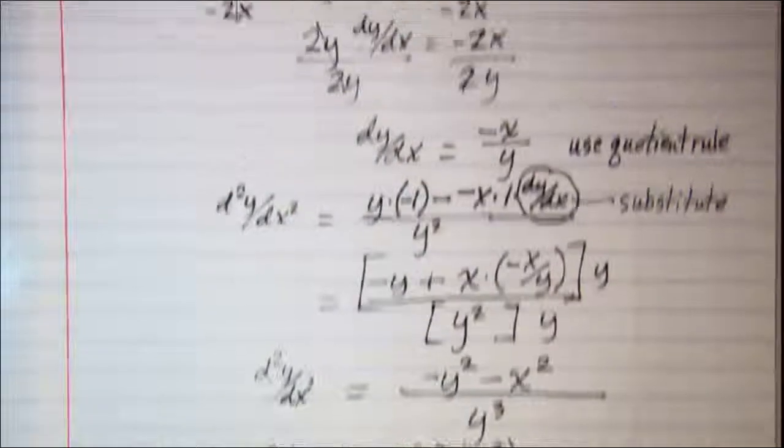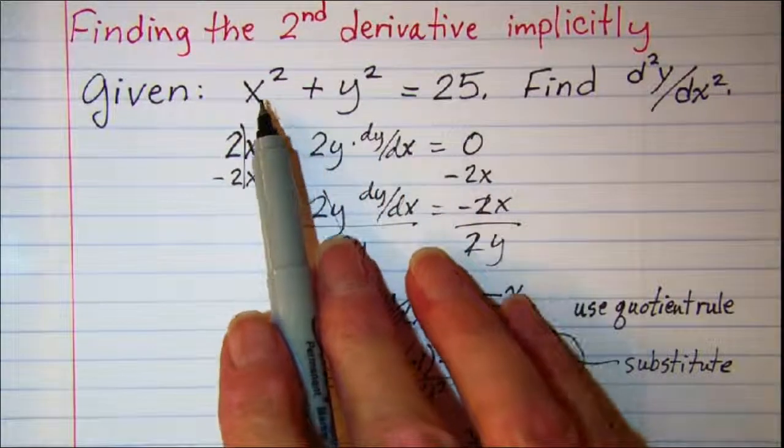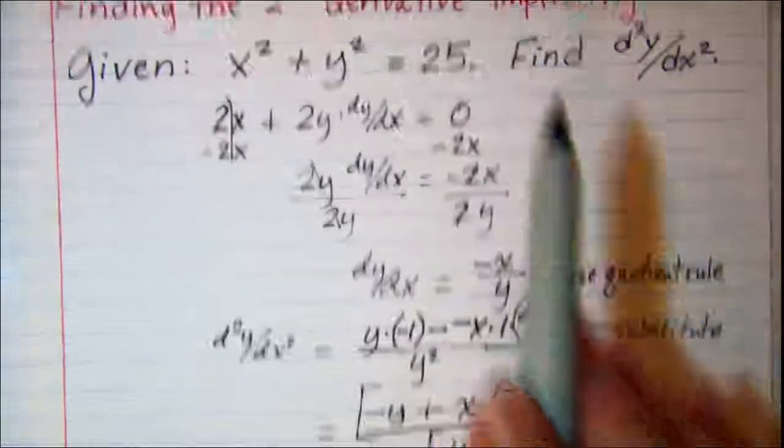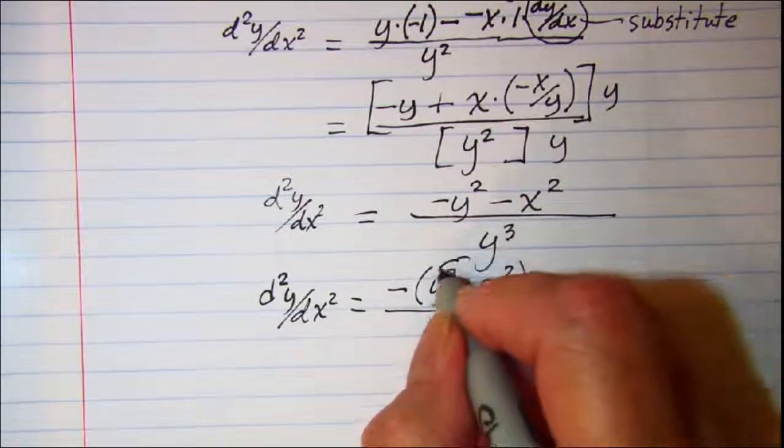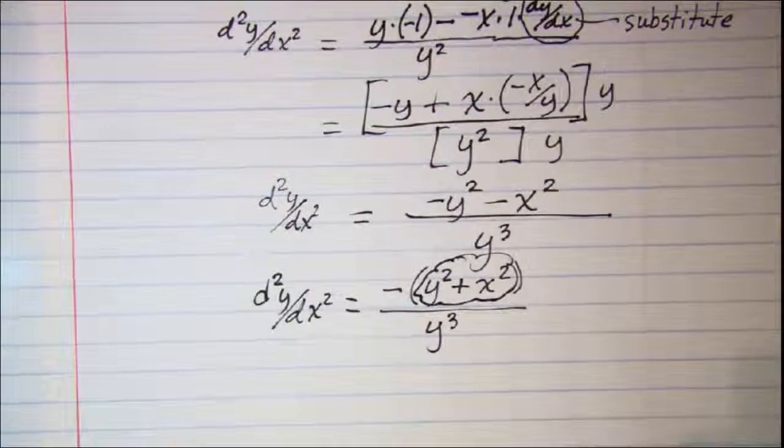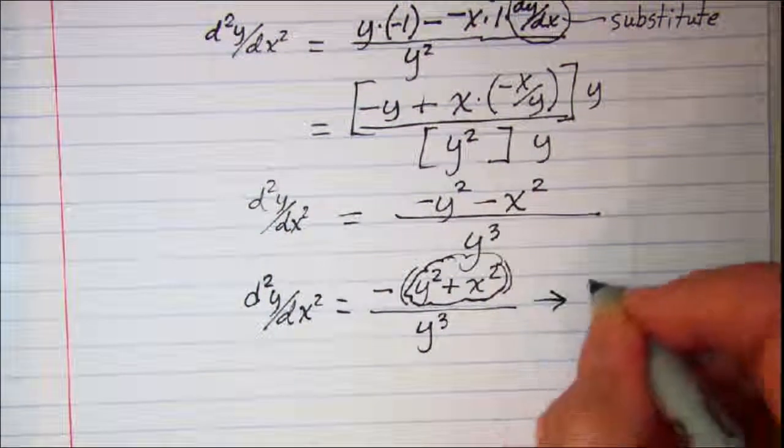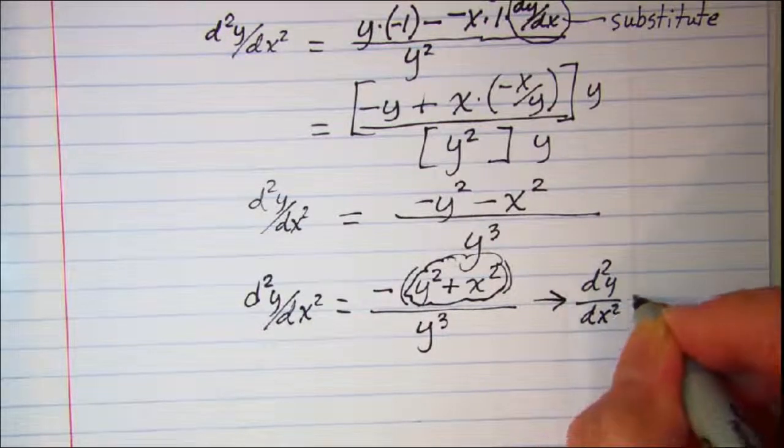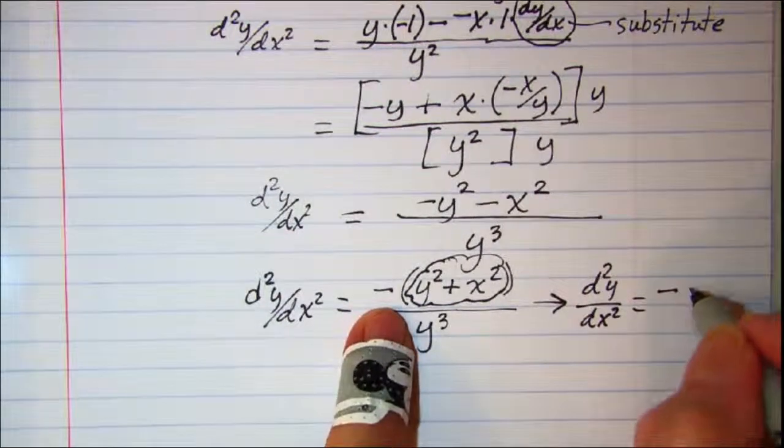Now all the way back at the beginning we are given that x² + y² is 25. So this part of my answer I can substitute in 25. So my second derivative is negative 25 over y cubed.